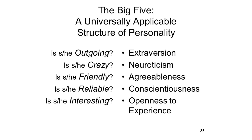I call the Big Five the five blind date questions, because they represent the most important things you'd like to know in advance about someone you don't already know but whom you're going to spend some time with. Is she outgoing? Is she crazy? Is she friendly? Is she trustworthy? And is she interesting? Really, what else would you need to know that's not somehow represented in these five questions?